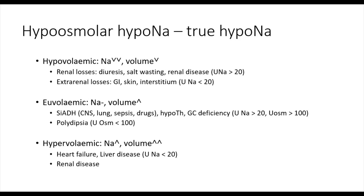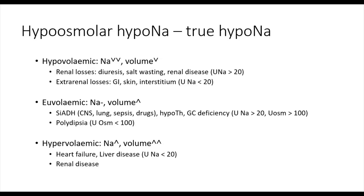You can also get what is colloquially known as third spacing, where in inflammatory states such as severe pancreatitis, the combination of vasodilation, possibly leaky vessels, and hypoalbuminemia in the context of an acute phase response leads to leakage of fluid from the intravascular space into the interstitial space. This leads to a reduced effective intravascular volume, activating the renin-angiotensin-aldosterone system, and subsequently causing water retention and hyponatremia. With increased sodium reabsorption, there's very little sodium in the urine — less than 20 millimoles per liter.